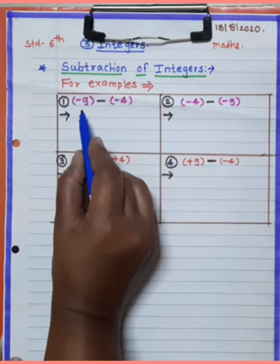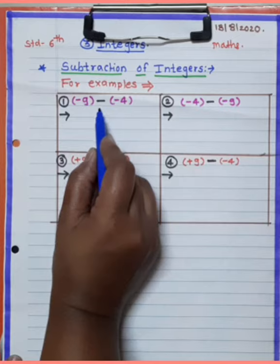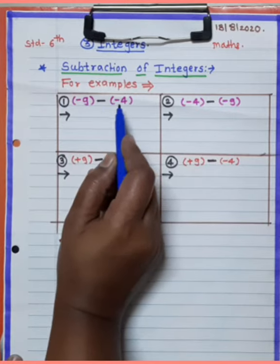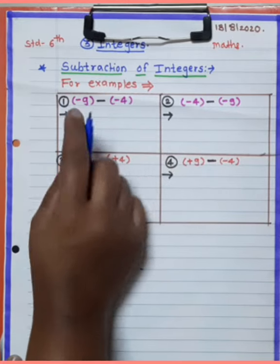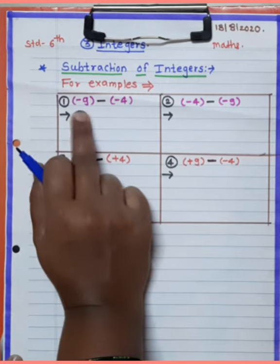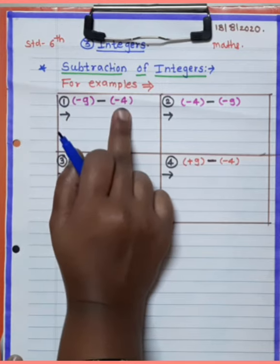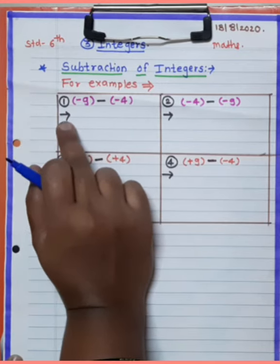The first example is: minus 9 minus minus 4. This means that two negative numbers are here — minus 9 and minus 4. These are two negative integers.